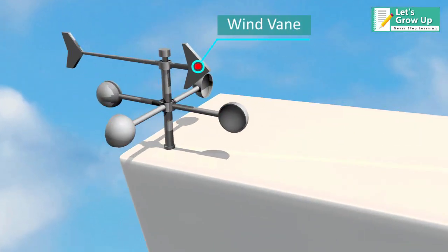Wind vane. It calculates the direction of the wind and adjusts the turbine with the direction of the wind.